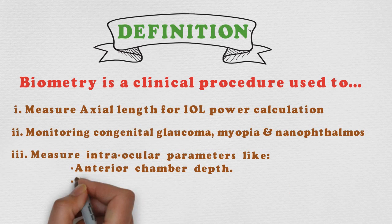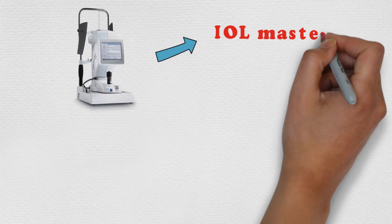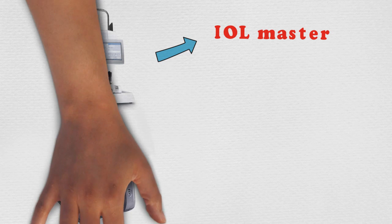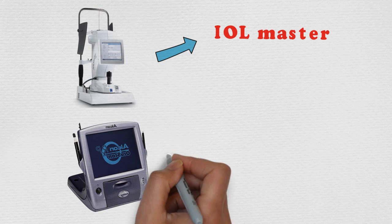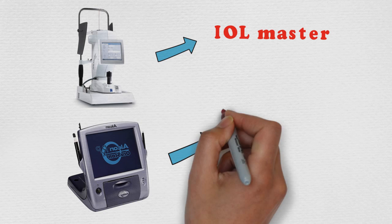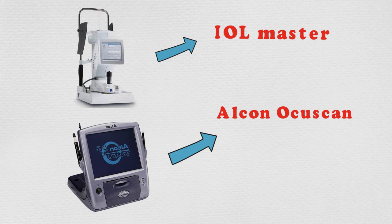Like anterior chamber depth and lens thickness. Here are some examples of biometers. This is IOL master biometer and here is another example of biometer, the Alcon Opuscan biometer.